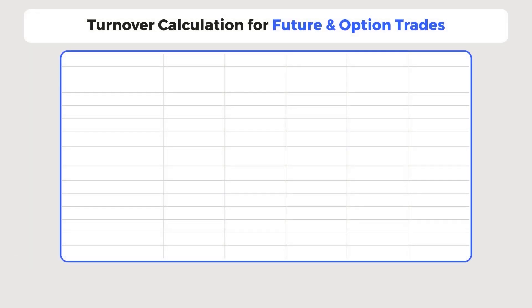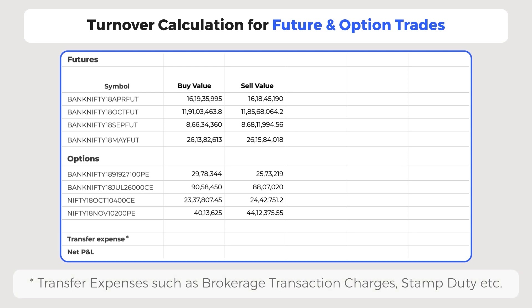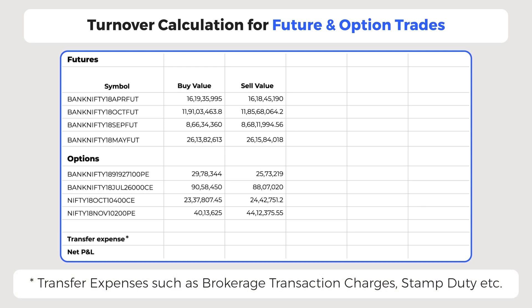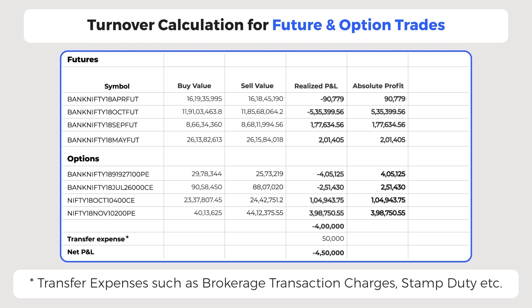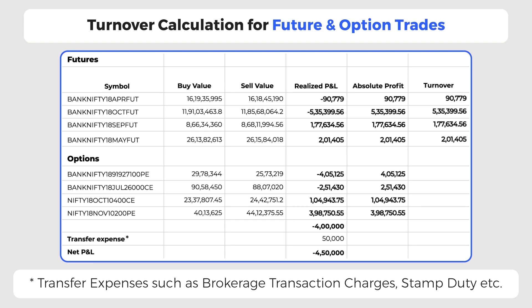Let's look at another case where the trader undertook F&O trades during the financial year. The realized P&L is the sale value minus buy value, making the total realized loss 4 lakh. Further adjusting with transaction expenses of 50,000, the net loss is 4,50,000. In case of futures, the trading turnover is the absolute profit. However, trading turnover for options is the absolute profit plus the premium paid on sale of options. After adding the futures and options turnover, the total turnover for F&O trades is 2 crore 4 lakh 833.